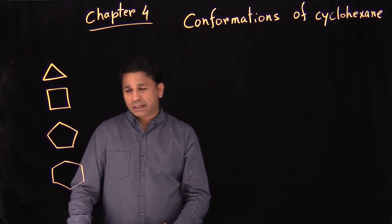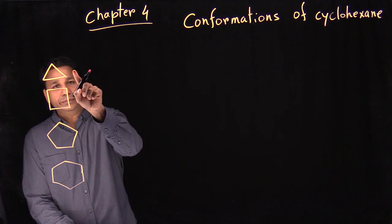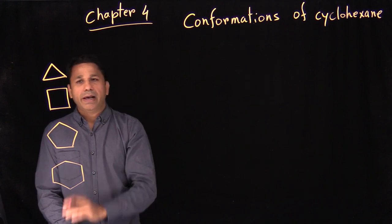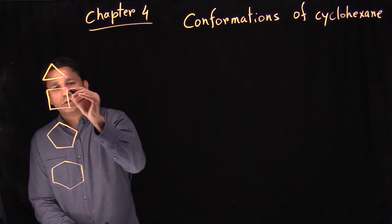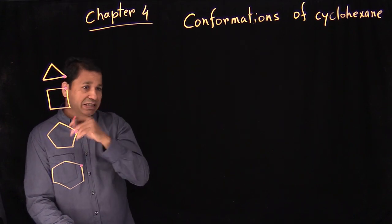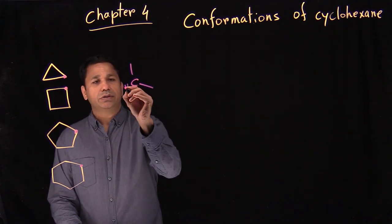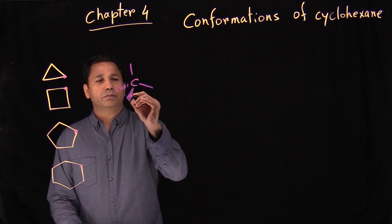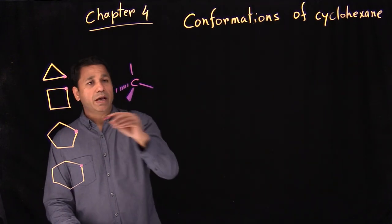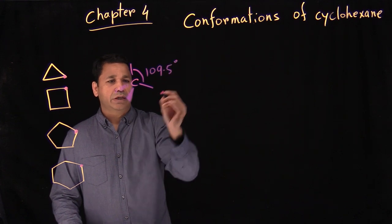Before we start talking about cyclohexane, let's compare. We have cyclopropane, cyclobutane, cyclopentane, and cyclohexane. If you pick any single carbon here, it's a single bond carbon, which means it is sp3 carbon. The sp3 carbon has all its different bonds, and the bond angle should be 109.5 degrees because that is tetrahedral.